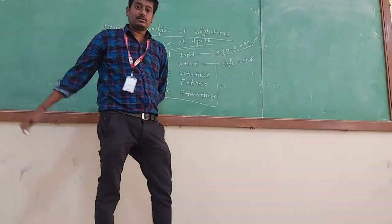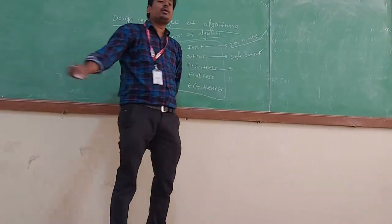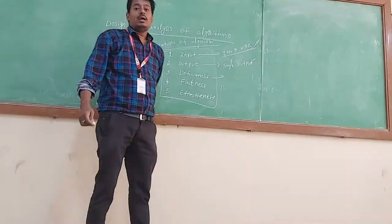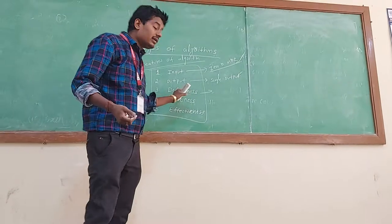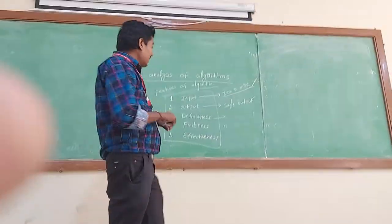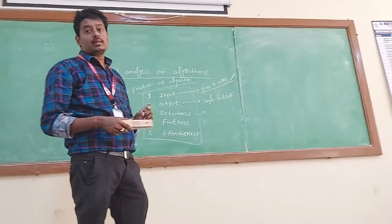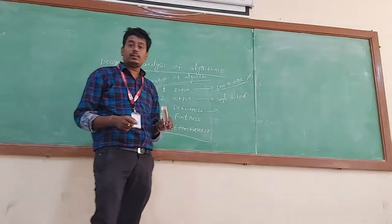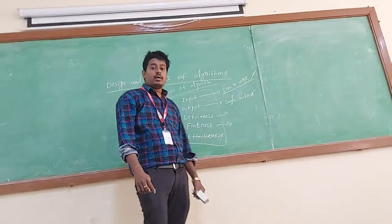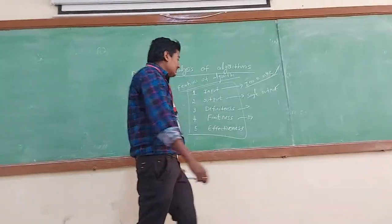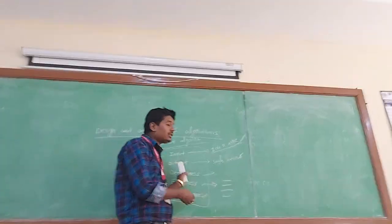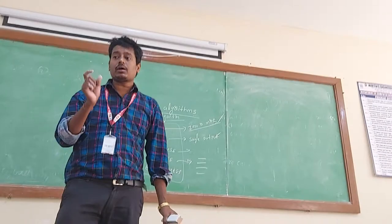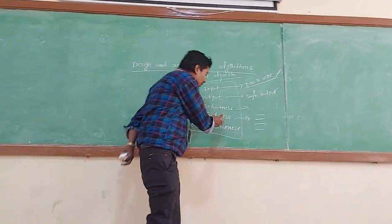Coming to definiteness — whenever an algorithm is perfect, it is called definiteness. That means without any ambiguity, the algorithm must be clear and precise. Coming to finiteness — finiteness of an algorithm means the algorithm must end after some finite number of steps. That means an algorithm always contains a limited number of steps.